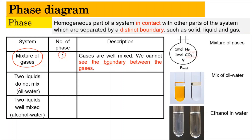Now let's look at two liquids that do not mix together — for example, oil and water. When you mix oil and water, it is going to separate into two layers. From that observation, you can see clearly there is one layer and another layer, and there is going to be a distinctive boundary between them. The number of phases here is going to be two.